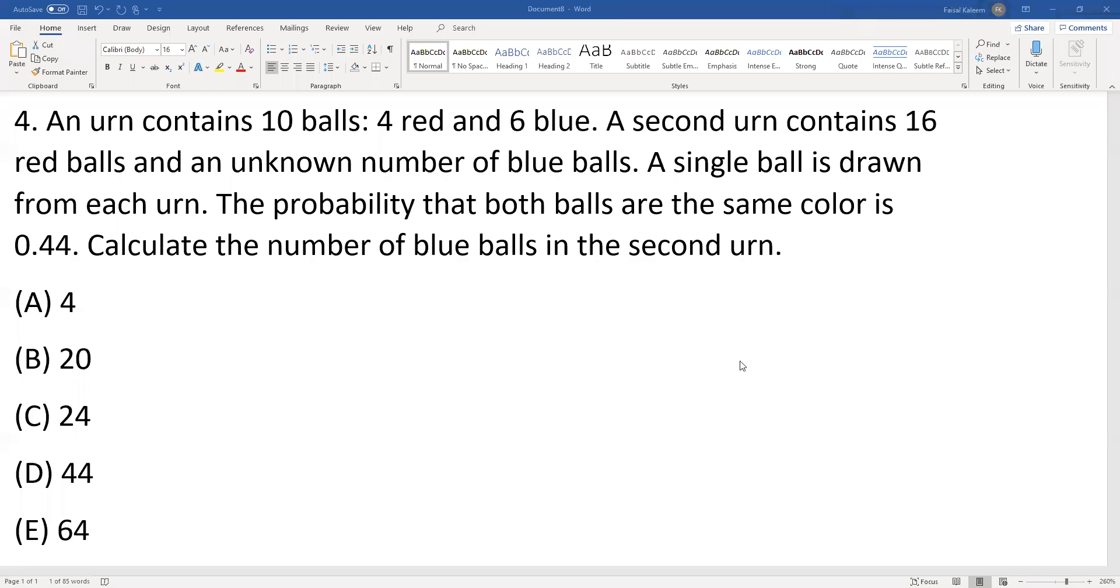Problem 4: An urn contains 10 balls, 4 red and 6 blue. A second urn contains 16 red and an unknown number of blue. A single ball is drawn from each urn. The probability that both are the same color is 0.44. Calculate the number of blue balls in the second urn.